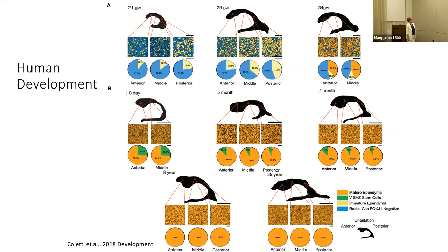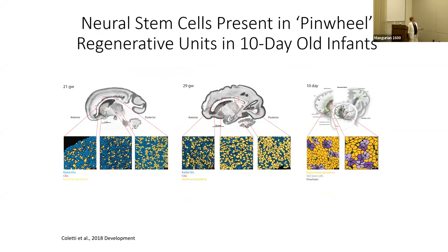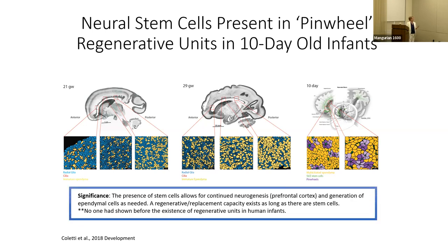By age two — and the next sample we had was from eight years — we don't see any stem cells remaining at eight years, nor at 39 years. We were interested not only in the progression, but in how stem cells are maintained in these clusters. Some clusters are outlined in purple — the multi-ciliated ependymal cells — with stem cells in the core. These are termed pinwheels, and every pinwheel is essentially a regenerative unit with capacity for regenerative repair. The question was: why retain these clusters instead of random stem cells?